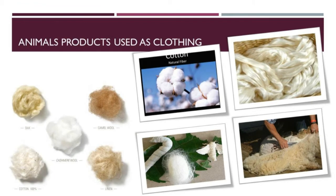Animal products used as clothing: Animal hair has great demand. The hair from goats and sheep is used for manufacturing woolen clothes, shawls, blankets, mufflers, and socks. Similarly, horse hair is used as bristles in small painting brushes. Even the fur of animals, including the skin, is used to make warm and modern-style clothes.